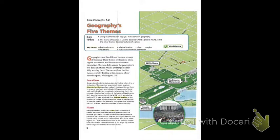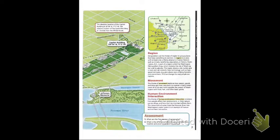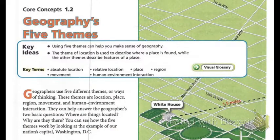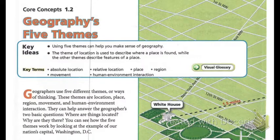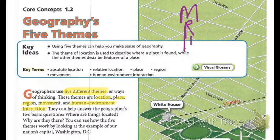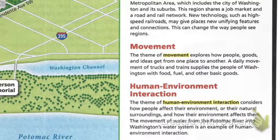In the textbook, if you would have read these pages, you will have read about the five themes of geography using Washington DC as the example. When geographers are investigating or studying a location, they look at each of these five themes. Now, there are five, but if you look at the key terms, you'll notice there's six of them, because location is divided into absolute and relative. All of these help determine where things are located and why they are there, so that you understand as you investigate the world around you.